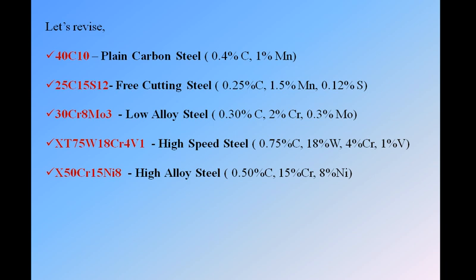Fourth example: XT75W18Cr4V1. As it starts with XT, this is always a high speed steel. The first number 75 divided by 100 gives 0.75% carbon. In high speed steel, elements like W (tungsten), Cr (chromium), and V (vanadium) followed by numbers are taken as they are — there is no divisible factor. So we have 18% tungsten, 4% chromium, and 1% vanadium.